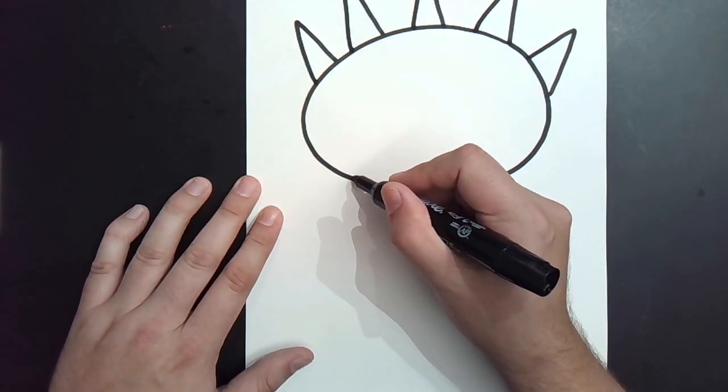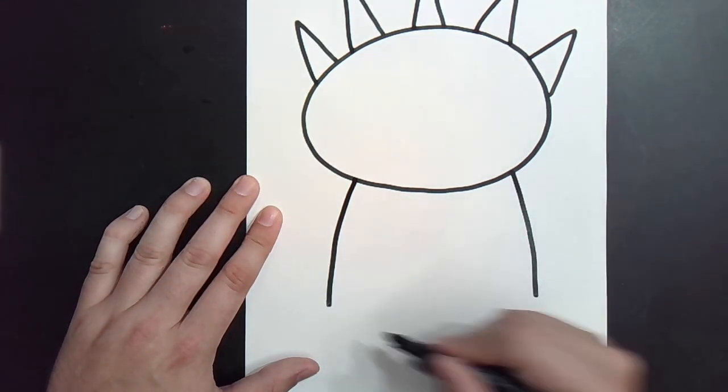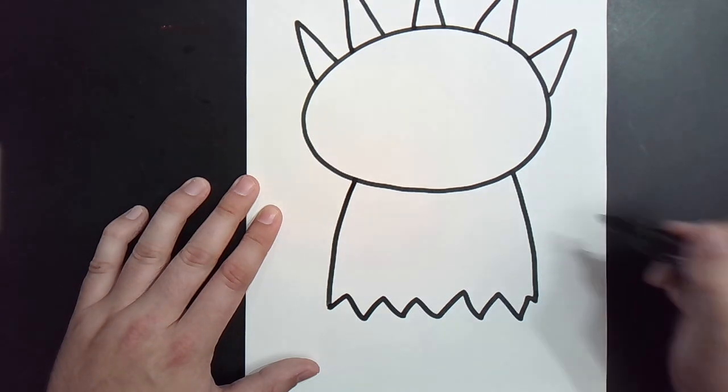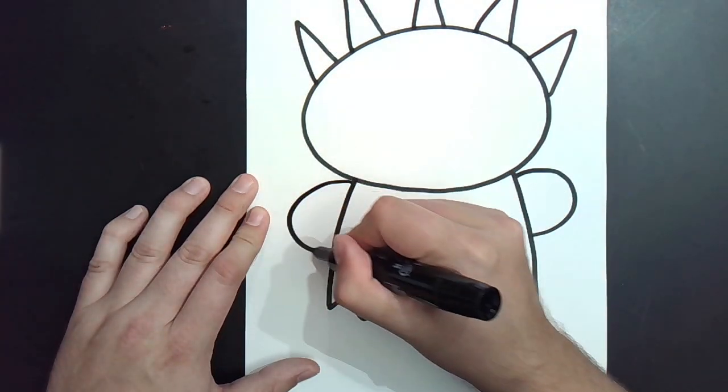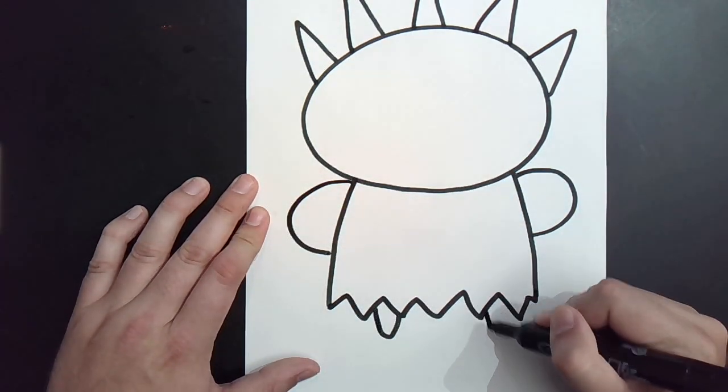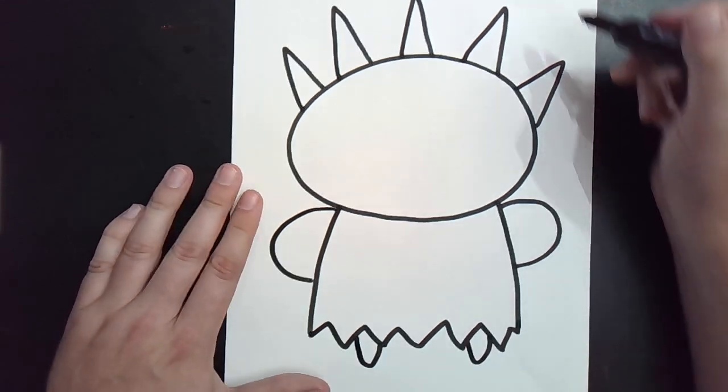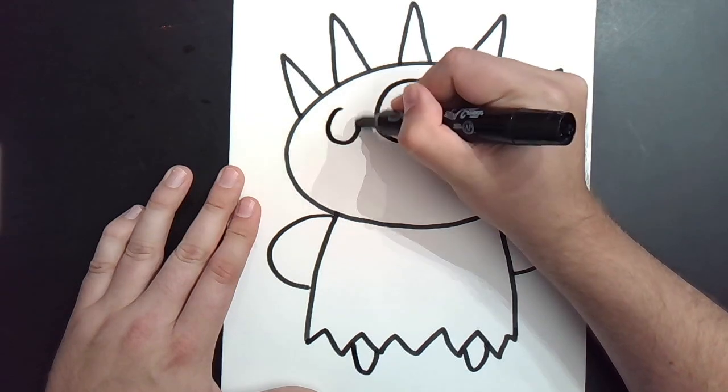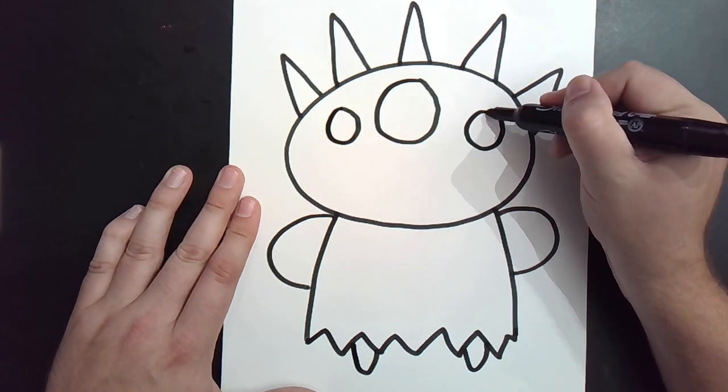For my body, let's do two lines down, a zigzag line across, some big arms, and some little legs. I want my monster to have three eyes, because why not? It's a monster. I can have as many eyes as I want.